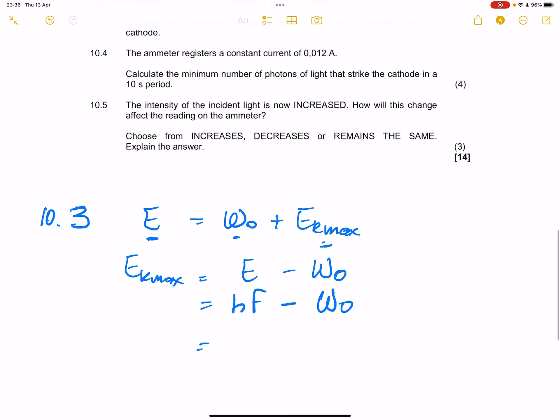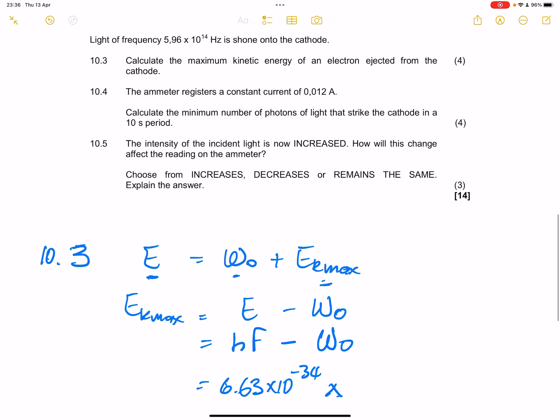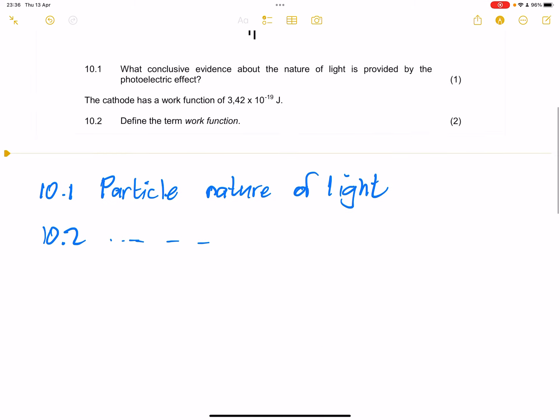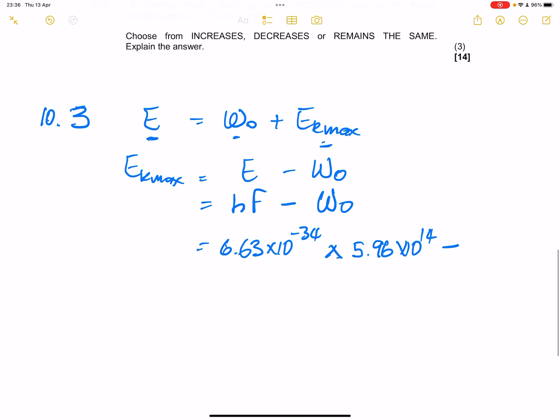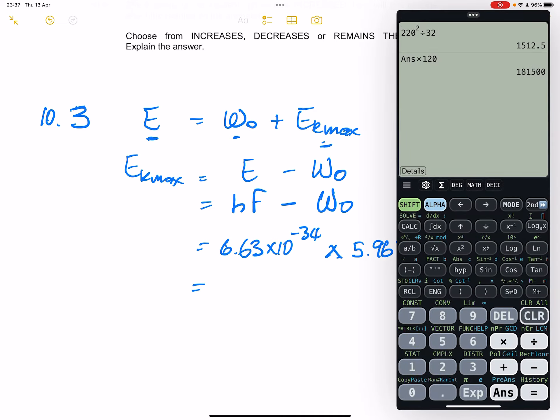So that means that E k max would be equal to the energy of the photon minus the work function. Remember we're given the frequency, so this is going to be Hf minus that work function that we're given. So we know that H is Planck's constant, that's 6.63 times 10 minus 34, multiplied by the frequency. Our frequency was given as 5.96 exponent 14. Minus the work function, they said it's 3.42 times 10 minus 19.